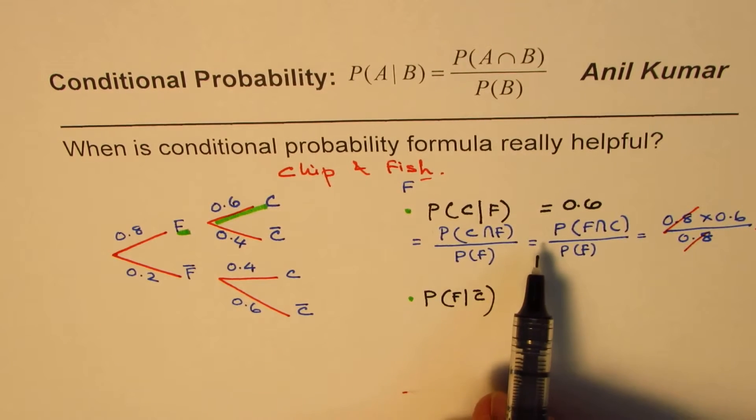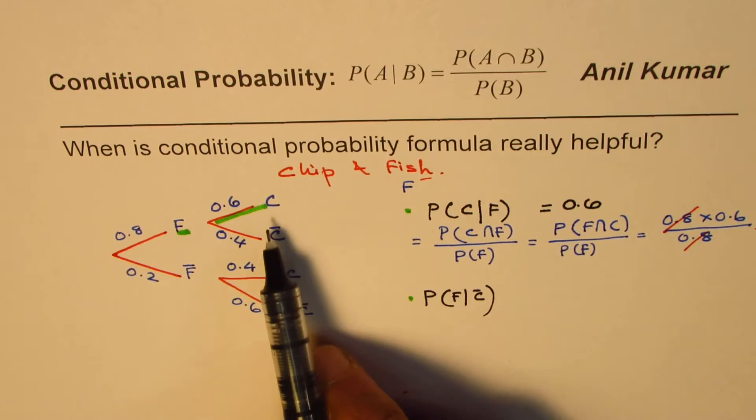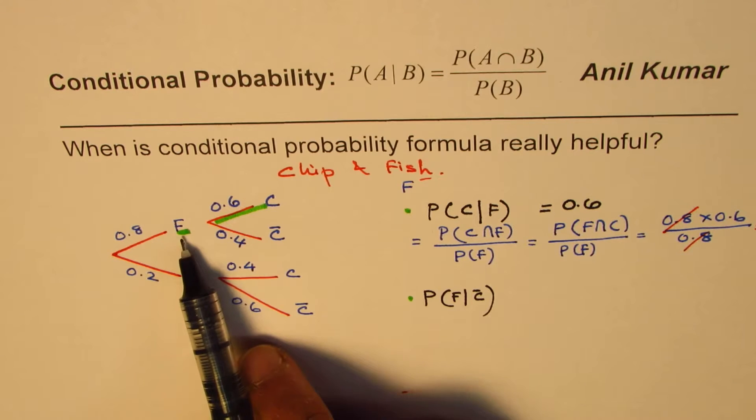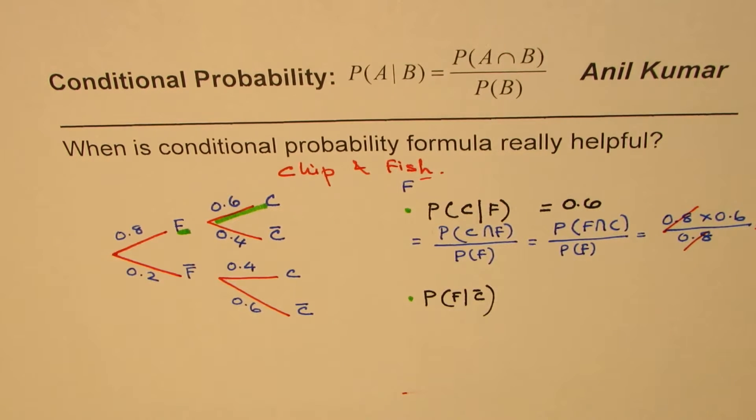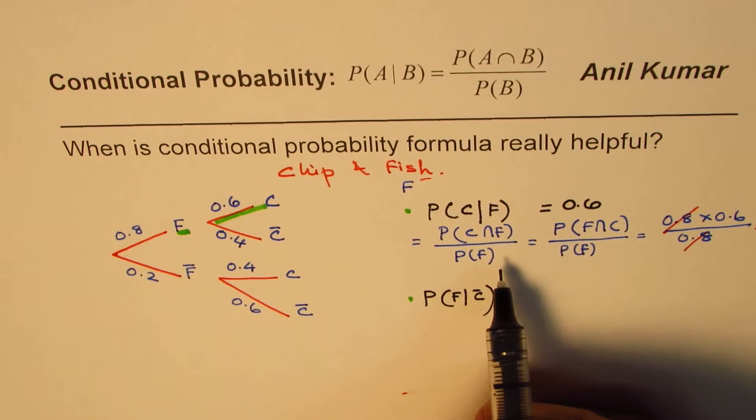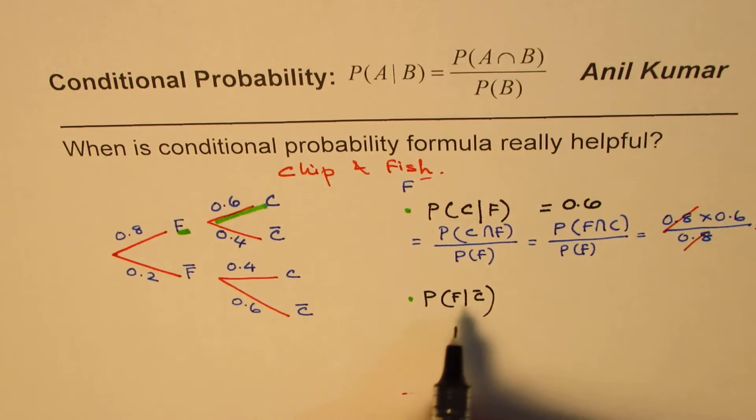But you can see very clearly that probability of ordering for chips when it is given that fish has been ordered is 60%. It is so obvious from the tree diagram that most of the time, we do not feel the need of applying this formula. Now, let us look into the second question.